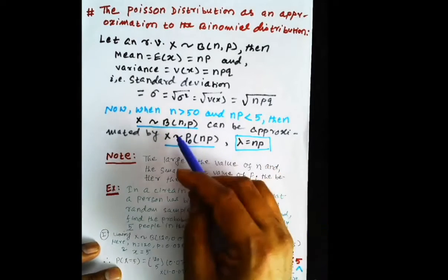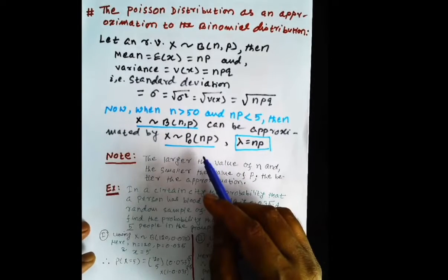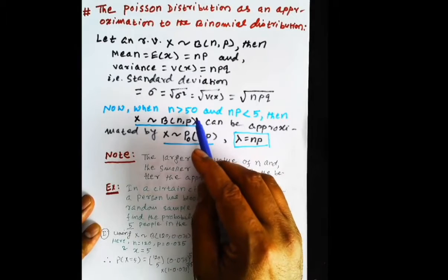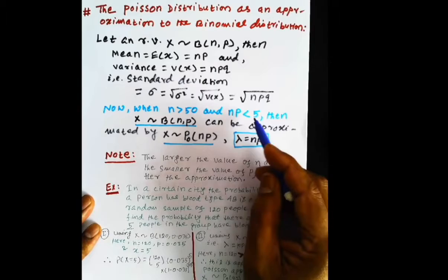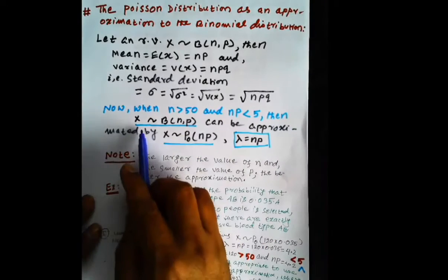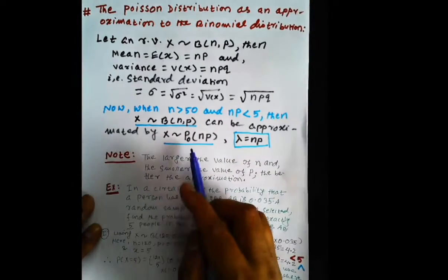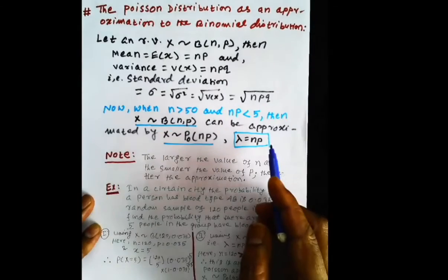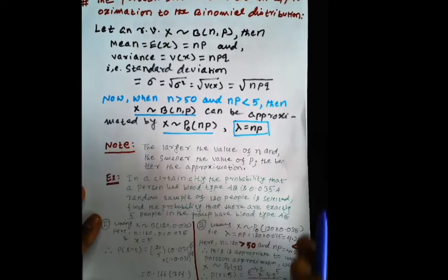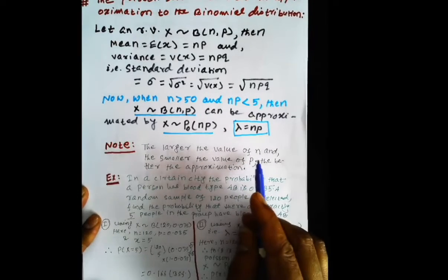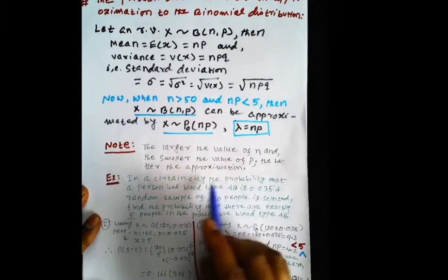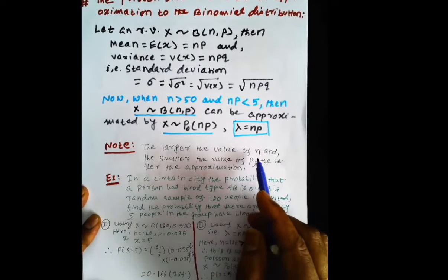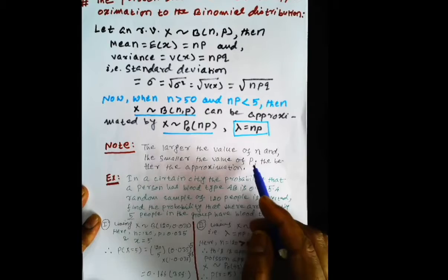From Bernoulli trials, as n tends to infinity and p tends to 0, the binomial distribution tends to the Poisson distribution. More specifically, when n is greater than 50 and n times p is less than 5, X following a binomial distribution with parameters n and p can be approximated by a Poisson distribution with parameter lambda equals np. Note: the larger the n and the smaller the p, the better the approximation.